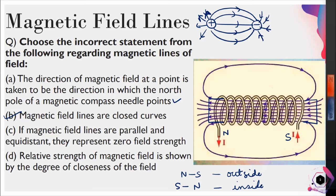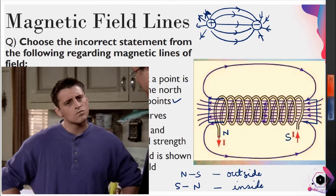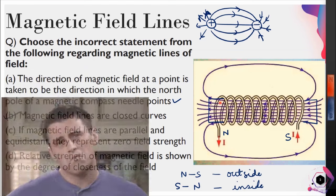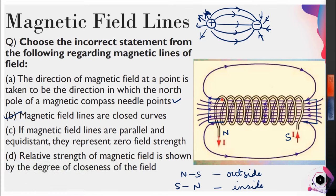Option C states: if magnetic field lines are parallel and equidistant, they represent zero field strength. Inside a solenoid, the field lines are parallel and equidistant. However, the core inside the solenoid gets magnetized, which means the magnetic field there is non-zero. Therefore, parallel and equidistant field lines do not represent zero field strength — this option is wrong, and hence this is our answer.